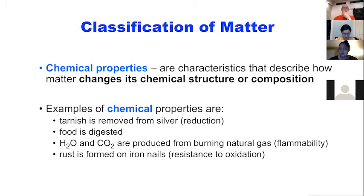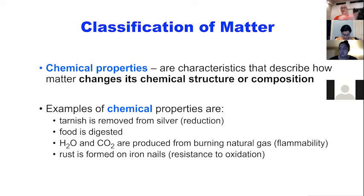When something rusts, that's also oxidation — just like silver tarnishing. Some elements oxidize very quickly; iron oxidizes very readily. That's why stainless steel was invented, to keep the iron in the steel from oxidizing so quickly. Resistance to oxidation is a chemical property — it doesn't have anything to do with mass, color, or size. It is a property of the actual chemical bonds inside that particular piece of matter.